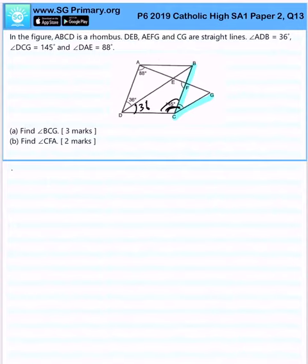Let's be clear that angle CDB is 36 degrees because if you have a diagonal cutting across a rhombus, that will be at equal length. Therefore, angle DCB would be 180 degrees. This will be an isosceles triangle: 180 minus 36 degrees minus 36 degrees, giving me 108 degrees.